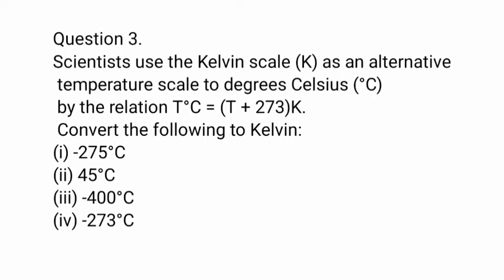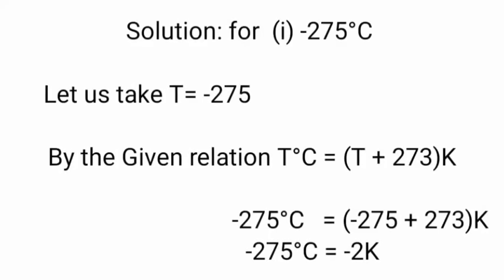Now let's see Question 3: Scientists use the Kelvin scale as an alternative temperature scale to degrees Celsius, by the relation T degrees Celsius is equal to T plus 273 Kelvin. Convert the following to Kelvin. Let's take the given temperature T equal to minus 275. By the given relation, T degrees Celsius is equal to T plus 273 Kelvin.